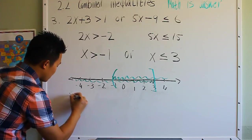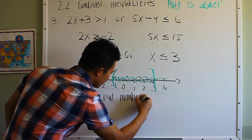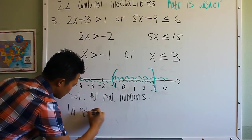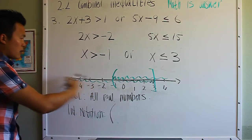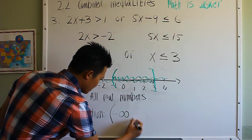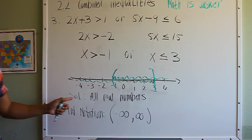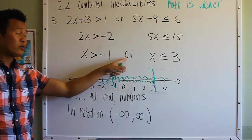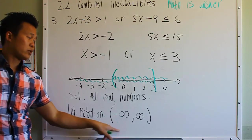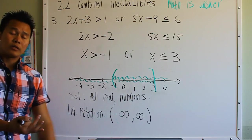Your solution is all real numbers. Using interval notation, since everything is shaded, the solution starts at negative infinity and goes all the way to positive infinity — written as (negative infinity, positive infinity). Make sure you analyze your inequality and see where your solution is. Check out the next video, where I'll show you how to solve absolute values in open sentences, which includes equalities and inequalities.